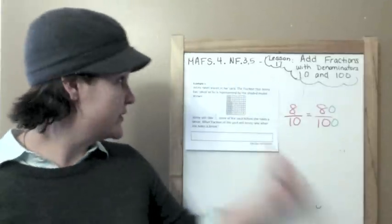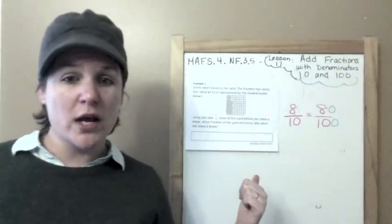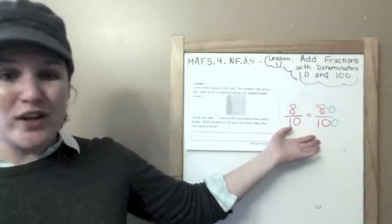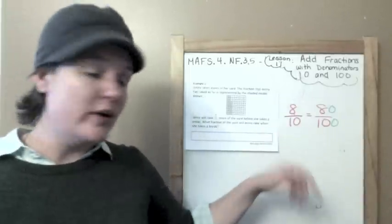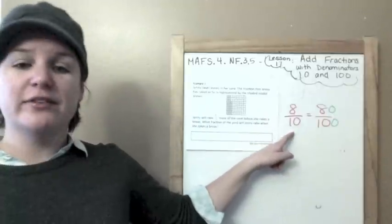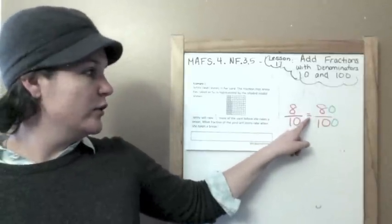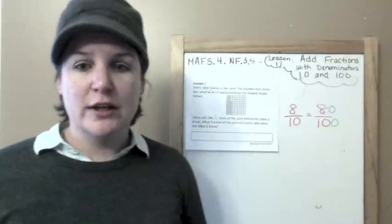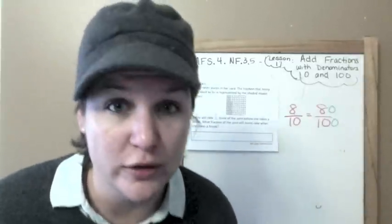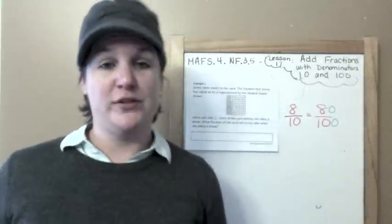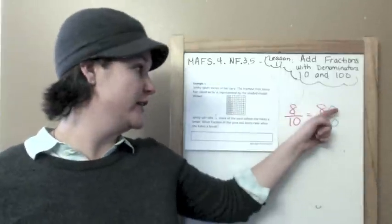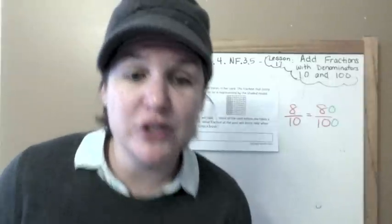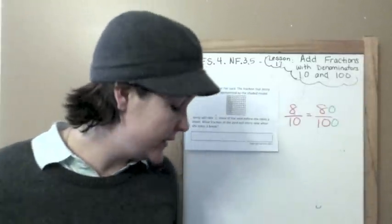We're going to get started on Example 1 in just a second, but here's what you need to know today: 8 tenths is equal to 8 tenths, and if we add a zero to each, that becomes 80 one-hundredths. If you add a zero to both the numerator and the denominator, you have an equivalent fraction. You need to know that for today's lesson.